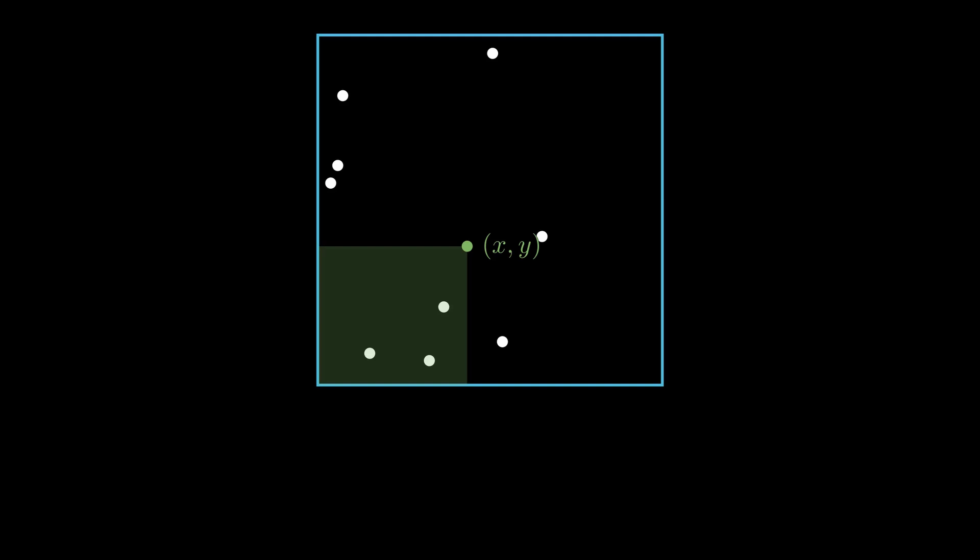Because the probability of a dot landing on a given region is equal to the area of that region, the probability of any k dots landing on this rectangular region is given by the expression n choose k into xy power k into 1 minus xy power n minus k. Taking into account the fact that the special dot itself could have landed anywhere on this board, the total probability is then the double integral of this expression with limits x from 0 to 1 and y from 0 to 1.